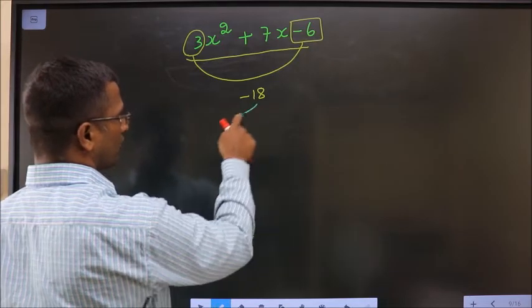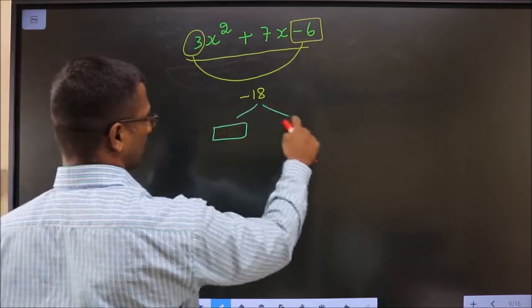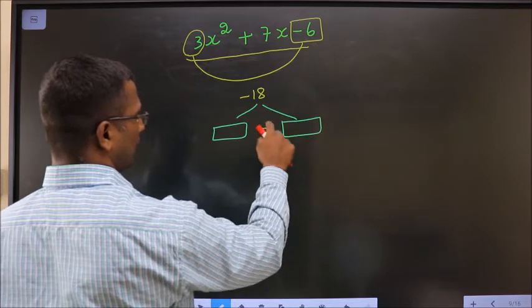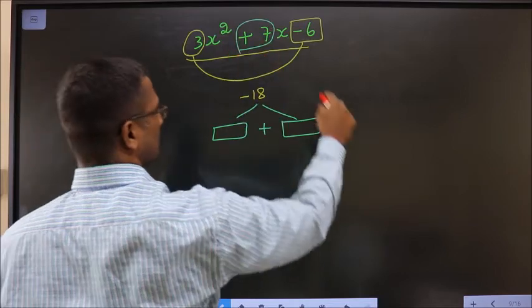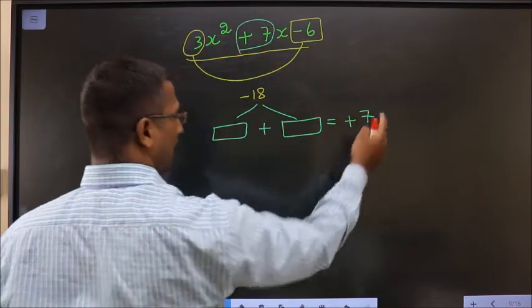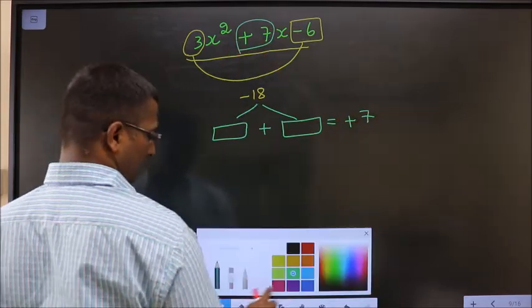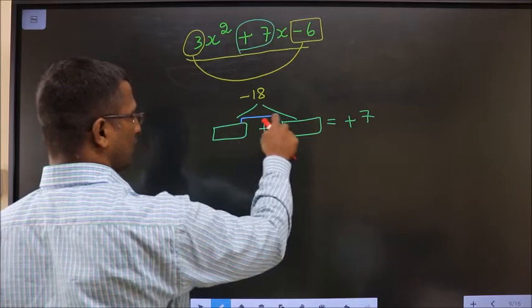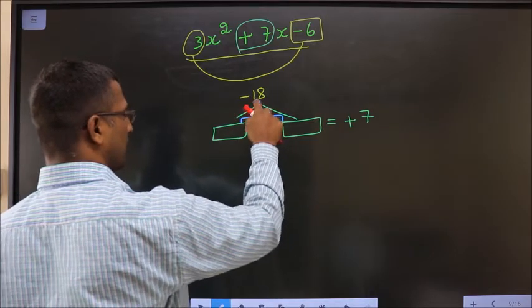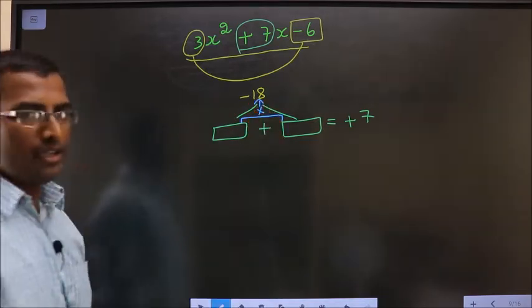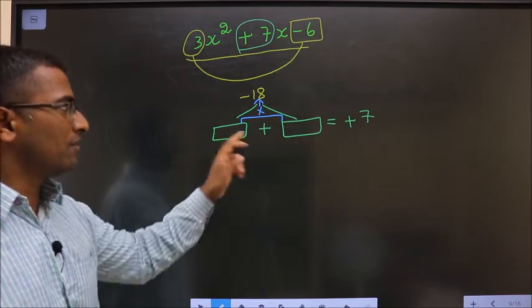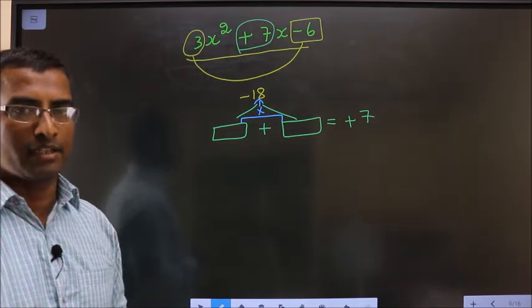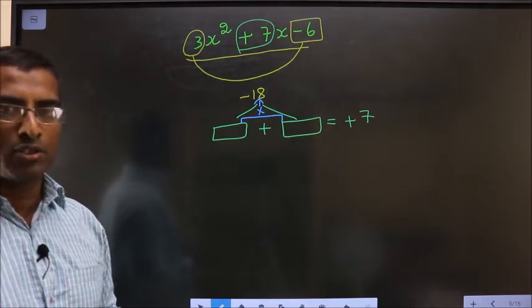You should look out for 2 numbers such that when you add them, you should get the middle number that is plus 7. And when you multiply these 2, you should get minus 18. Clear? Look out for 2 numbers such that when you add, you should get plus 7. When you multiply, you should get minus 18. And how do we get those 2 numbers?